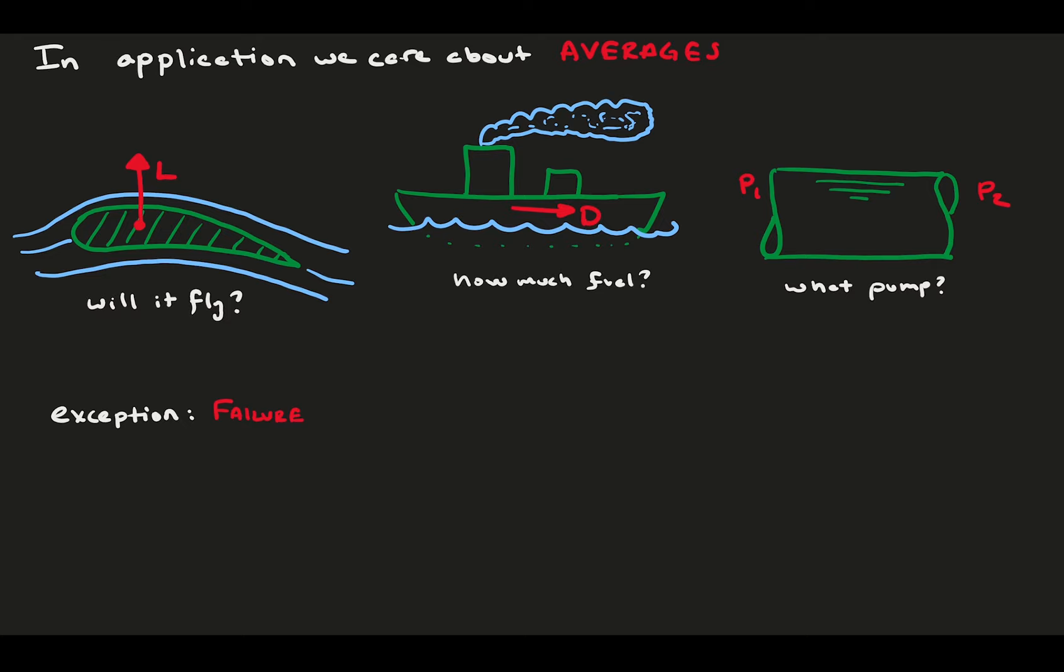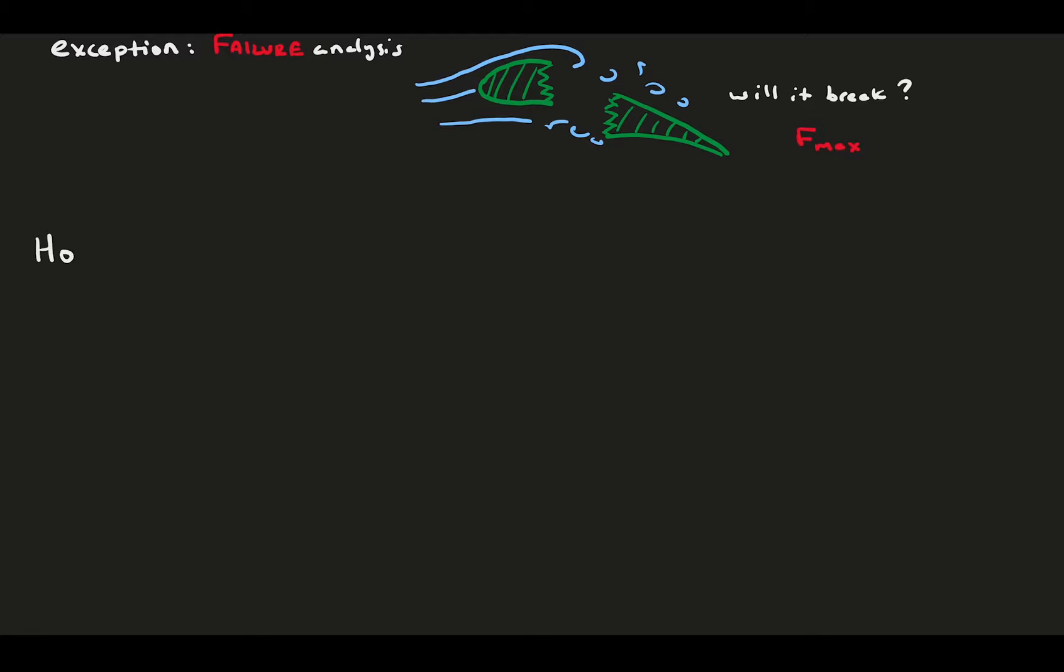In pipe flows, the average pressure drop is what tells you what type of pump you'll need and how long to make the pipe. Averages are super important, with few exceptions. One of those exceptions is failure analysis, where we're concerned with the worst case scenario and not the average scenario. Although you might design an aircraft wing to provide the right average lift, you also better be sure that a large pressure fluctuation won't break it in half.